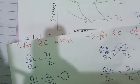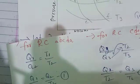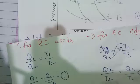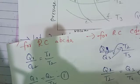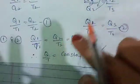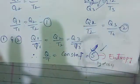So Q by T is equal to constant, which is known as entropy. This is the thermal property which remains constant along with heat during the adiabatic process. So along with heat, Q by T is constant.